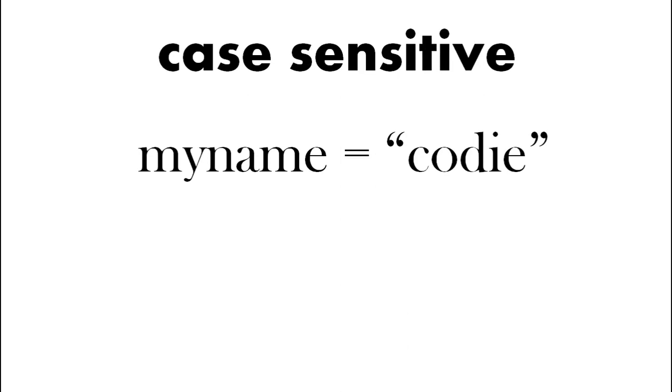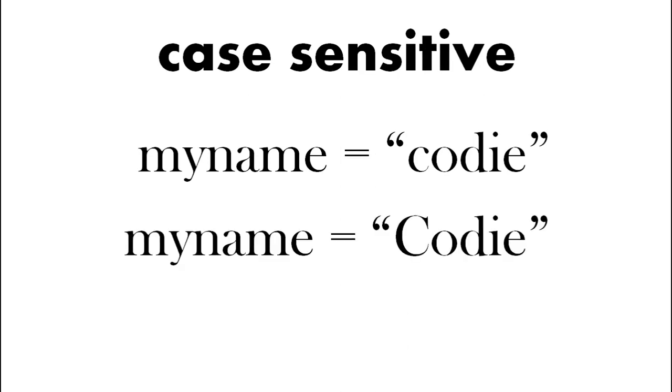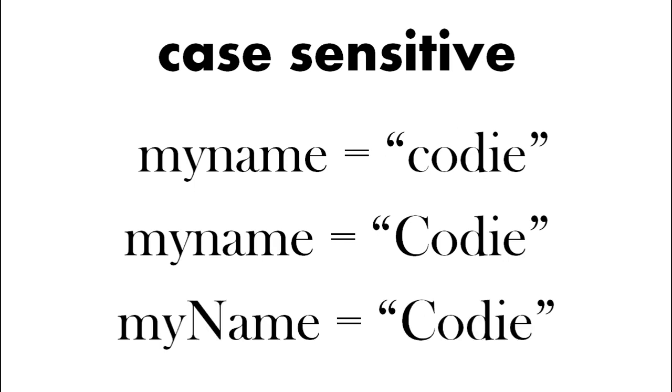Be careful. Here we have myname equals Cody. If we change the C to uppercase that's a different string and not the same. And also the variable name. Here we've made the N a capital N uppercase and that is different. So myname and myName with an uppercase N are two different variables. So be careful. It's case sensitive.